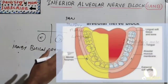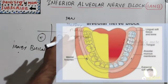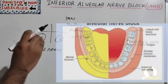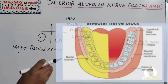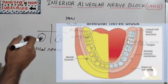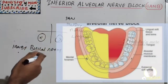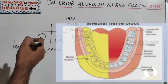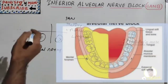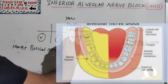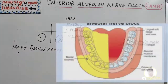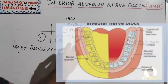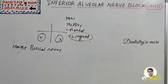The area anesthetized includes mandibular teeth to the midline, the body of the mandible, inferior portion of the ramus, buccal mucoperiosteum and mucous membrane anterior to the mandibular first molar (through the mental nerve), the anterior two-thirds of the tongue and floor of the oral cavity (through the lingual nerve), and lingual soft tissues and periosteum also through the lingual nerve.